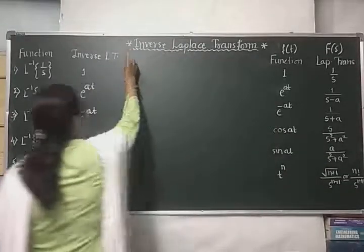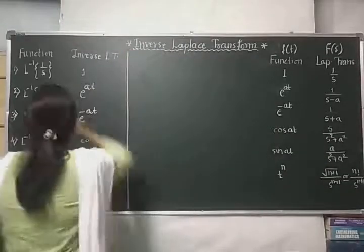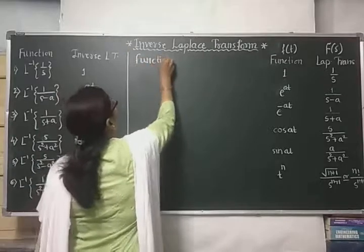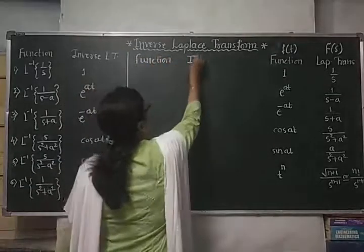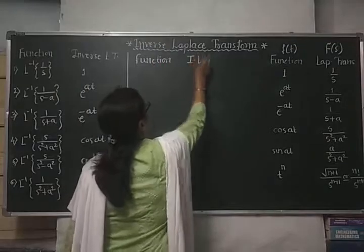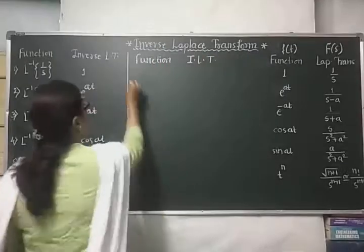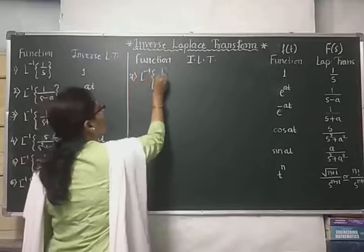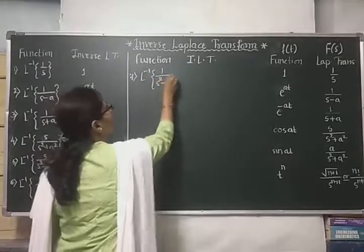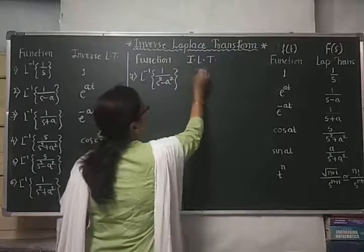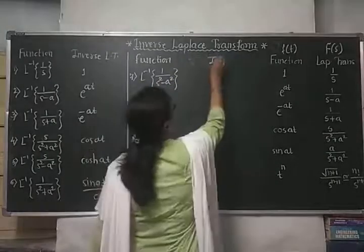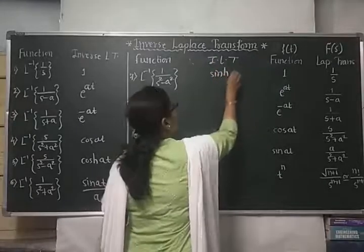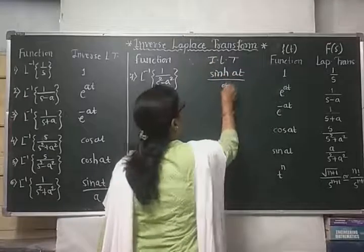The seventh result is: the Laplace inverse of 1/(s²−a²) is sinh(at)/a, which is the hyperbolic sine formula.